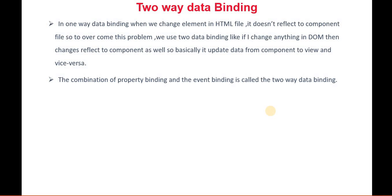So two-way data binding is basically a communication between the component to the HTML and HTML to the component side. So from both ways, we exchange data. That is the two-way data binding. But in the one-way data binding, we have only one way of communication.